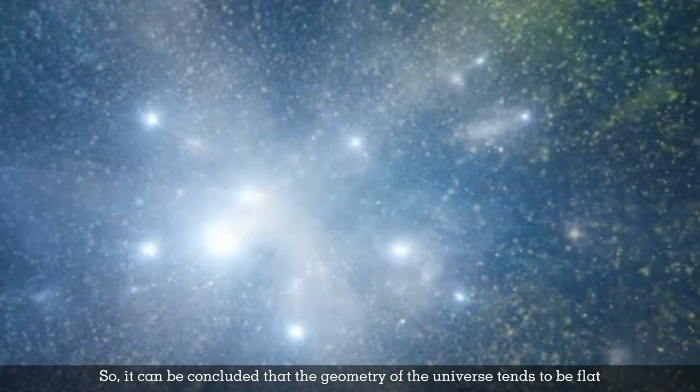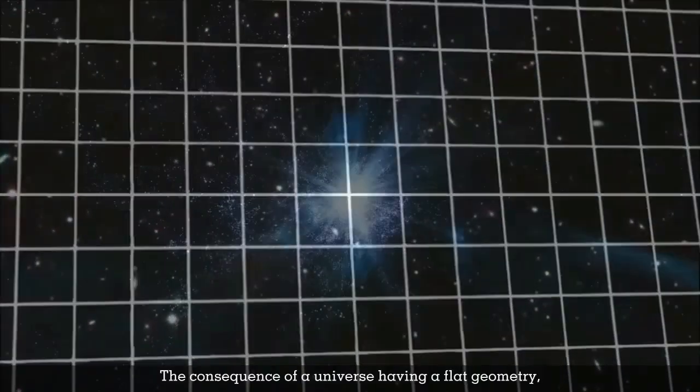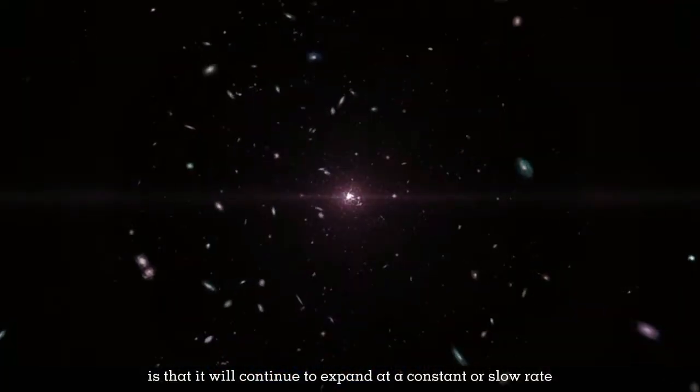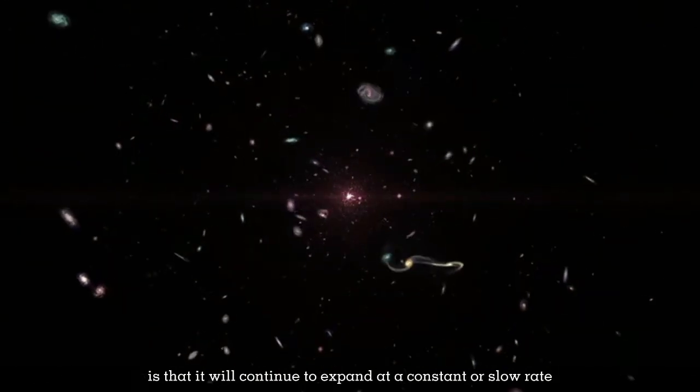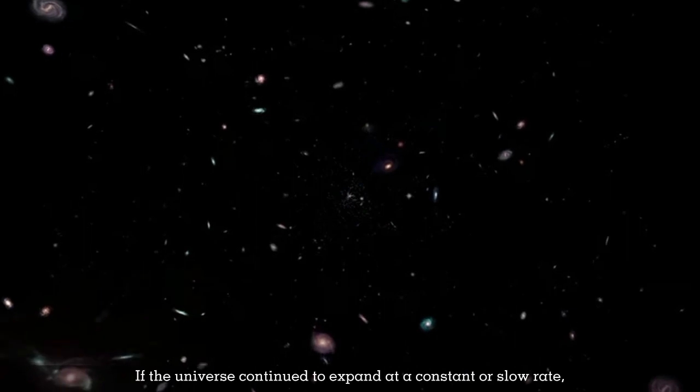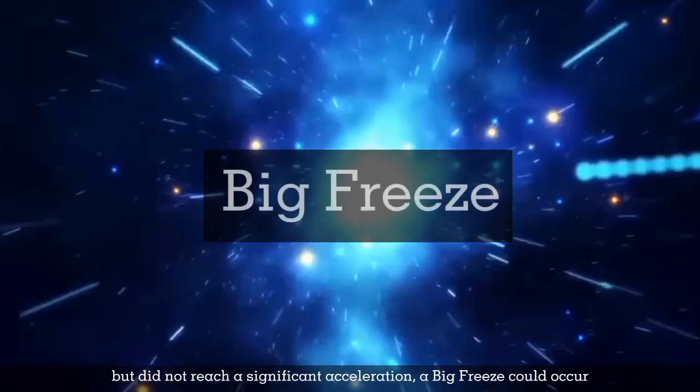So, it can be concluded that the geometry of the universe tends to be flat. The consequence of a universe having a flat geometry is that it will continue to expand at a constant or slow rate. If the universe continued to expand at a constant or slow rate, but did not reach a significant acceleration, a big freeze could occur.